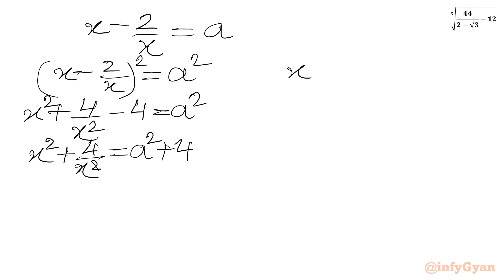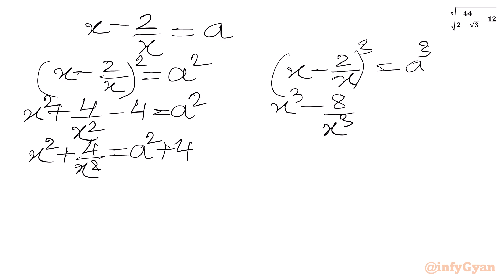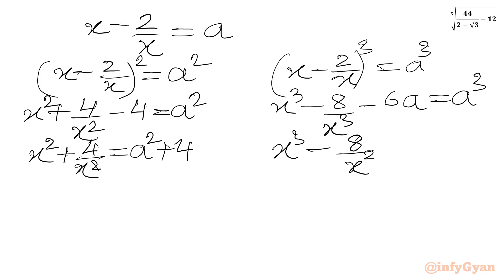Now cubing both sides of a = x − 2/x using the (a − b)³ formula: x³ − 8/x³ − 3·(x)·(2/x)·(x − 2/x) = a³, which gives x³ − 8/x³ − 6a = a³, so x³ − 8/x³ = a³ + 6a. This is equation 5.